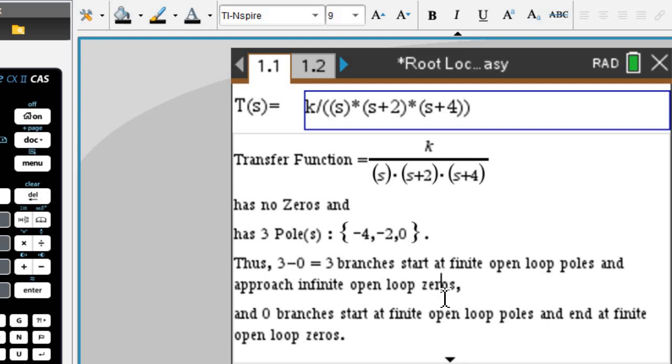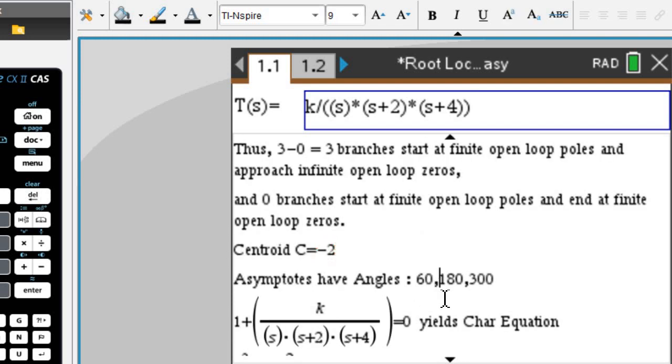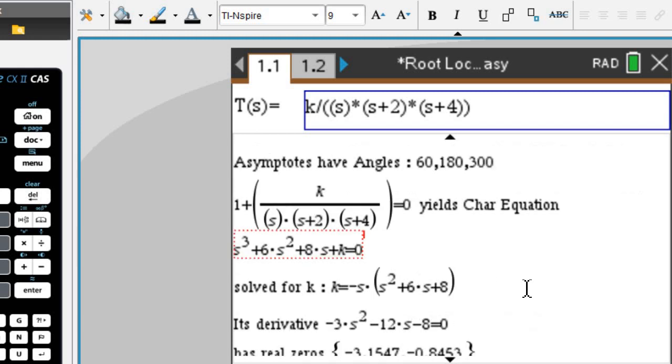infinite open loop zeros. Further, we will find the centroid C at negative two. We have asymptotes at 60, 180, and 300 degrees.